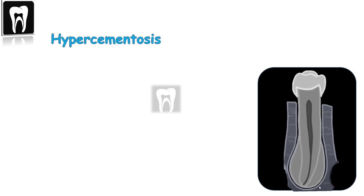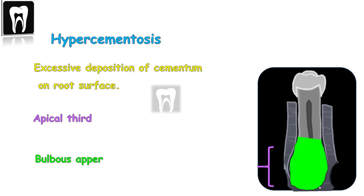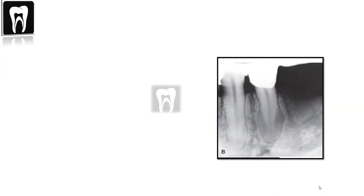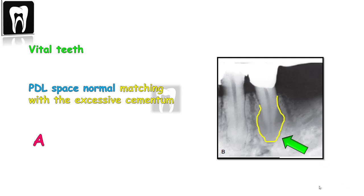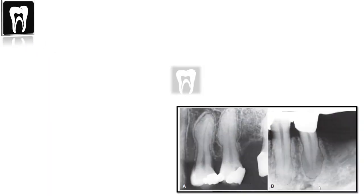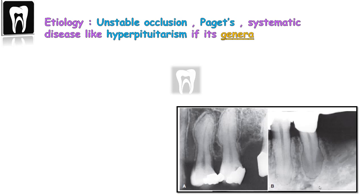Hypercementosis — as the name shows, is the buildup of excess cementum on the root surfaces. This deposition of cementum typically occurs within the apical third on the posterior mandibular teeth and may give the root a bulbous appearance. Though the appearance is unusual, the tooth is vital and the periapical space and the lamina dura will be normal and continuous around the area of the hypercementosis. You can say the root of the teeth is just getting bigger. The exact etiology is unknown; however, it's theorized to be a response to unstable or changing occlusion. Conditions such as Paget's disease and hyperpituitarism should be ruled out if the hypercementosis is generalized.